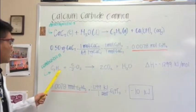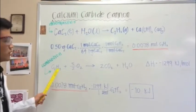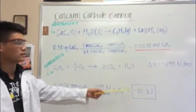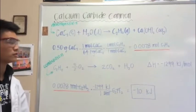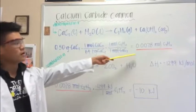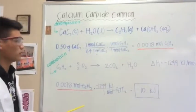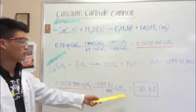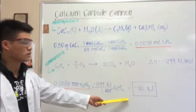We then combusted the C2H2, represented by this equation. It has a delta H of negative 1299 kilojoules per mole, and using the moles we found earlier, we used stoichiometry to calculate that the reaction released 10 kilojoules.